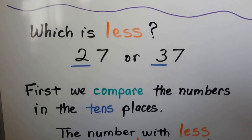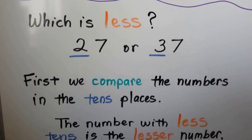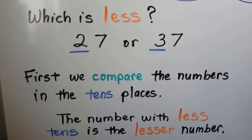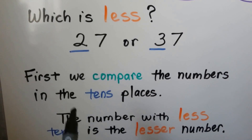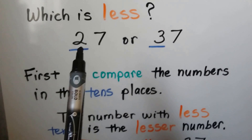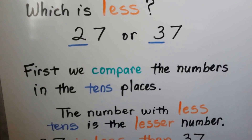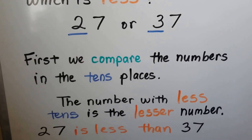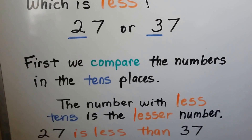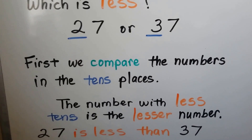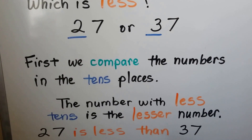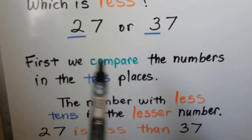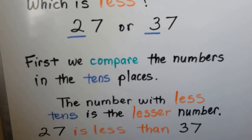So which is less: twenty-seven or thirty-seven? First, we compare the numbers in the tens place. This has a two, this has a three. The number with less tens is the lesser number. Twenty-seven is less than thirty-seven — it only has two tens, and this one has three tens.